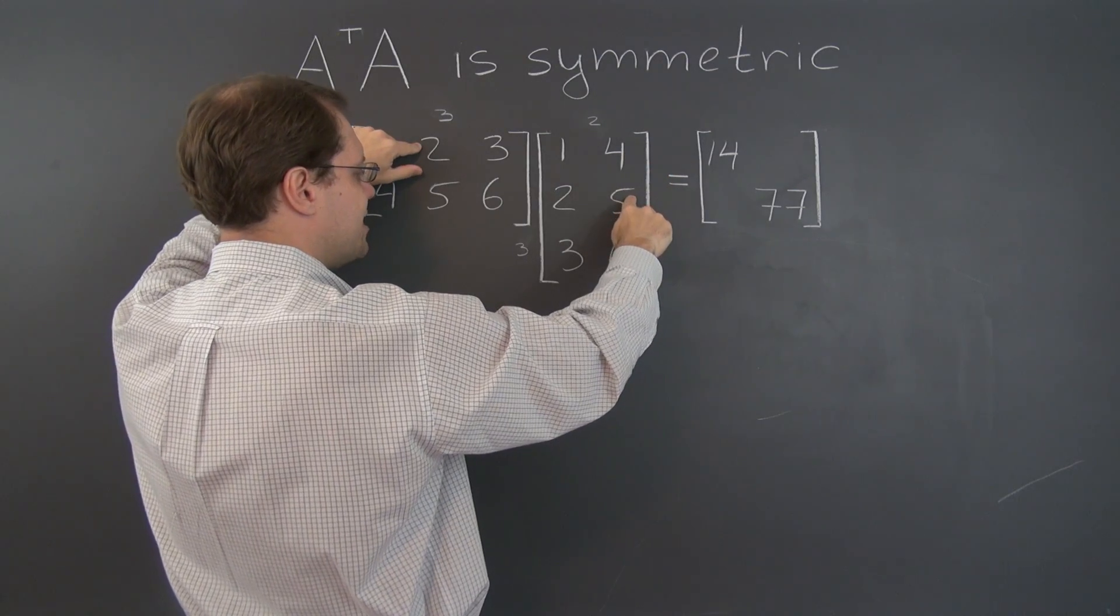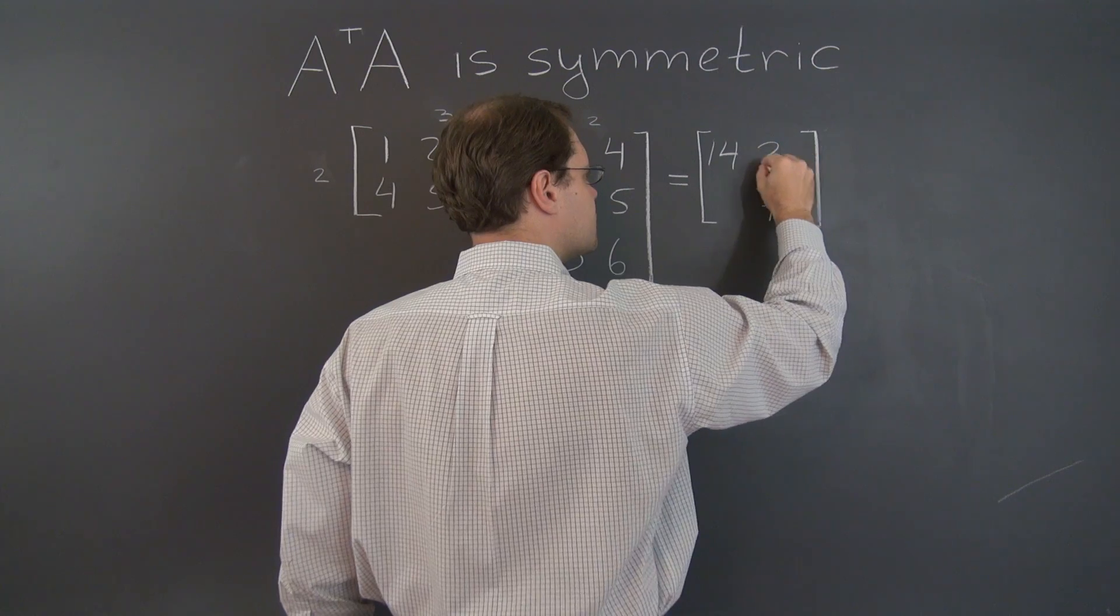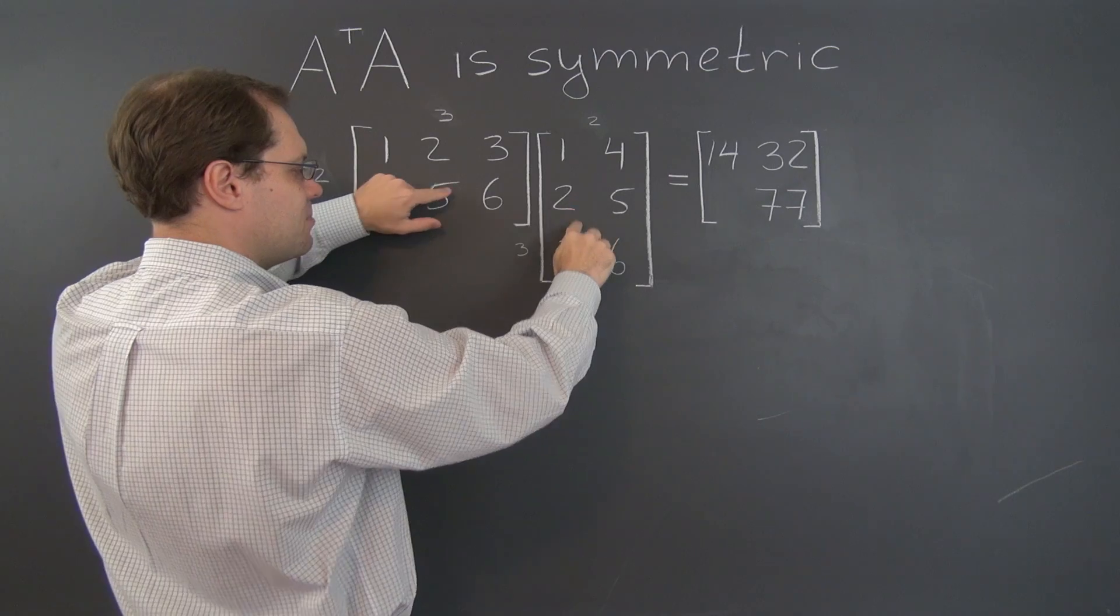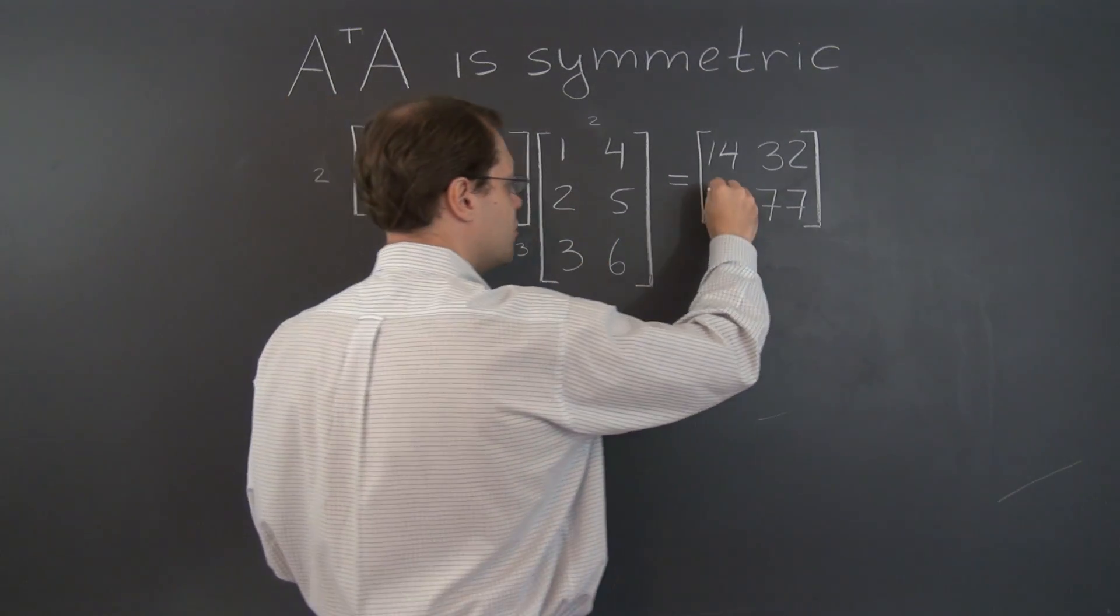Once again, 4 plus 10, that's 14, plus 18, 32. And this entry equals 4 plus 10 plus 18, and did you hear how it's the sum of the exact same numbers? So 32.